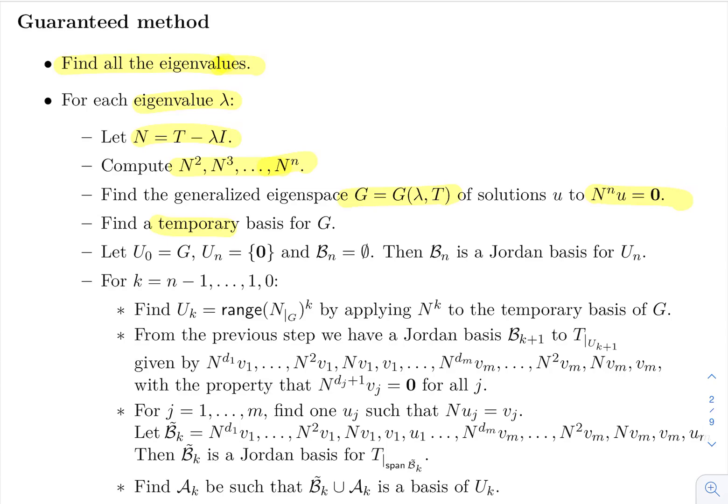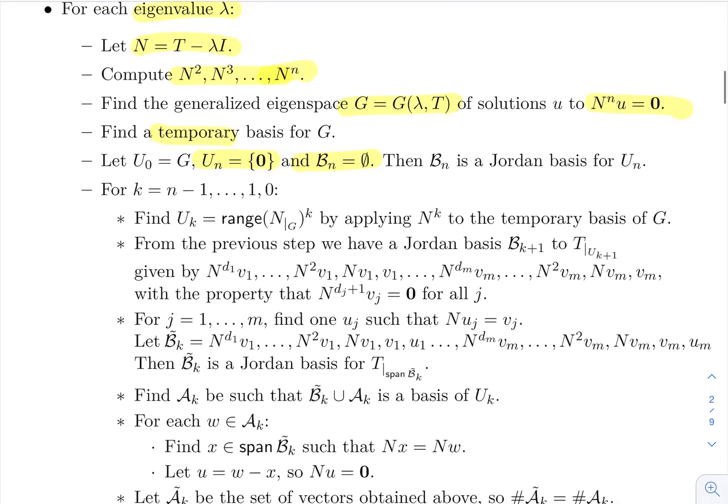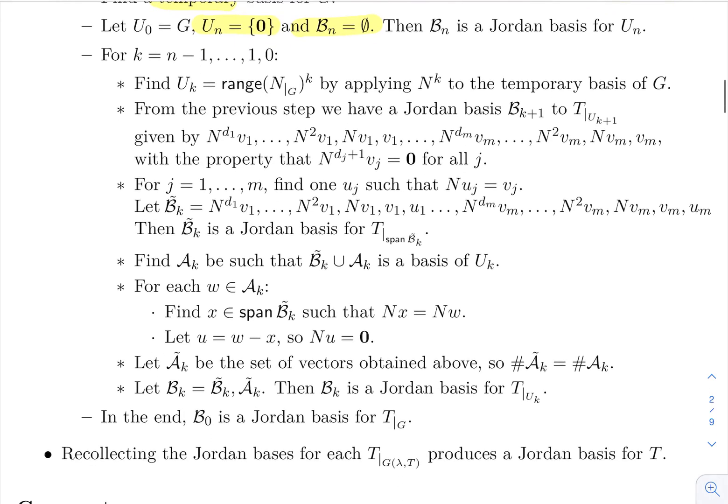And now we reproduce the proof. We start from U_n equals zero, and then we have the empty set as a Jordan basis for that subspace. And we keep going back, just reproducing exactly what we did in the proof. We're just now giving names to those variables and collections of vectors that will be convenient.